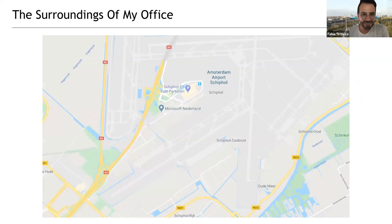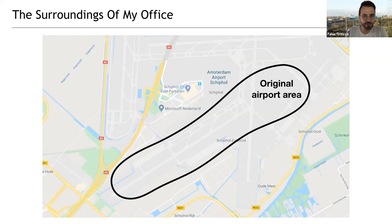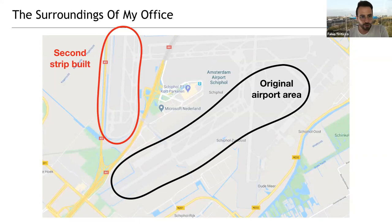I want to give you a little background about this talk. We are going to go to an airport. The slide on screen is a section of Google Maps representing the Amsterdam airport called Schiphol. The area highlighted is the original airstrip, built maybe in the 1920s or so. As traffic grew over time — more flights, more planes — it became clear there was a necessity for a new strip.